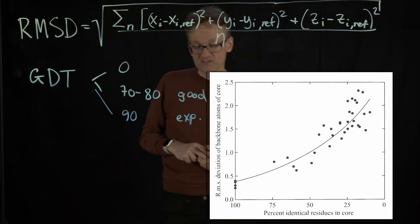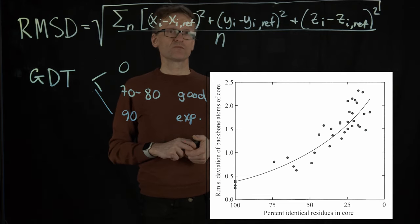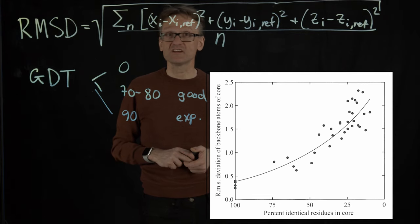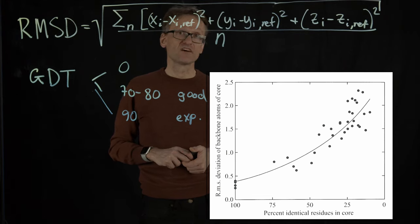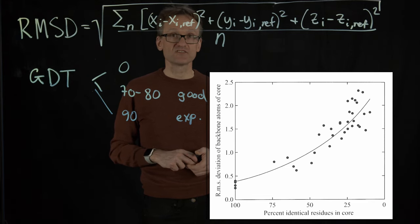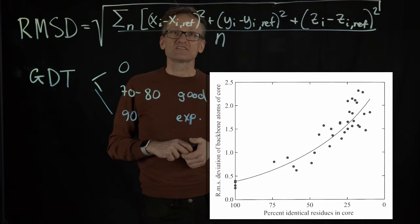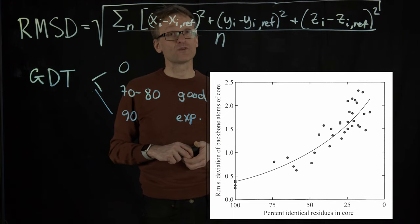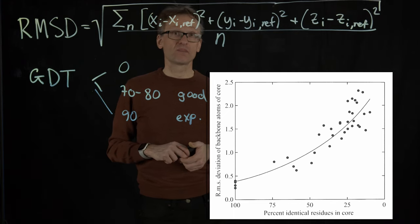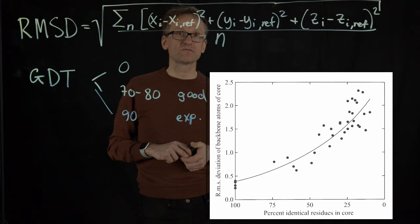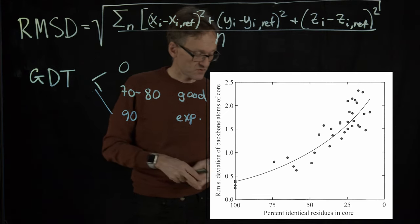The take-home message of this plot is twofold. First, you don't need as much identity as you think. Three out of four residues can be different and they will still have the same structure on average. Very few exceptions. Second, it's a gliding scale. If we have 80% identity it's of course better than if you only have 20, but you should be fairly certain about this fairly early.